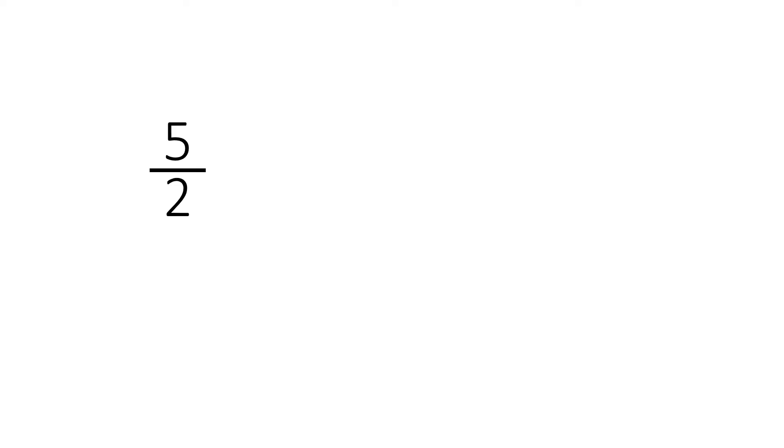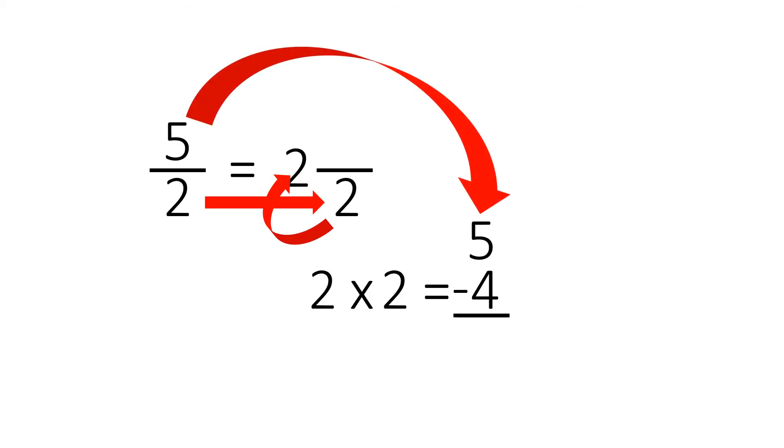Now we know that 2 goes into 5 twice. So we write the 2 up here. However, we're going to have some left over. So we draw the little dividing line. We put a 2 on the bottom because that's the denominator, and denominator will stay the same. And then we take 2, the denominator, times this 2 equals 4. Then we take the 5 from the improper fraction and we subtract it. 5 minus 4 will equal 1. And then we take the 1 and we put it on top right here. So 5 over 2 will be 2 and 1/2.